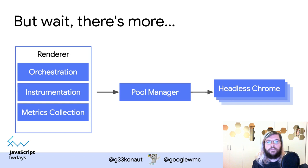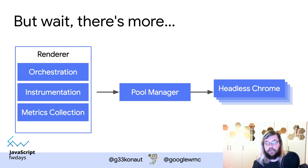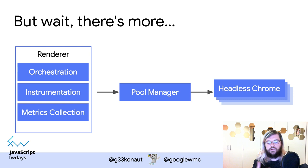To make this as efficient as possible, the rendering service has several components. One is the headless Chrome instance that renders your page — an evergreen Chrome updated to the latest stable version every couple of weeks after release. To avoid starting and killing a browser for every page, we maintain a pool of browser instances. A pool manager handles health checks across multiple Chrome instances, distributing render jobs. If one browser crashes during a render, we try a different instance.